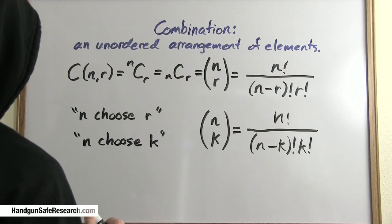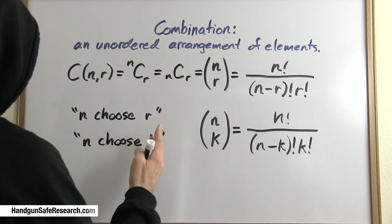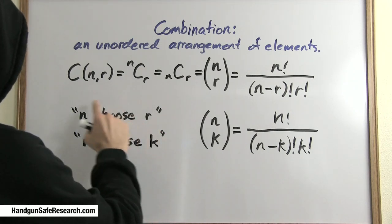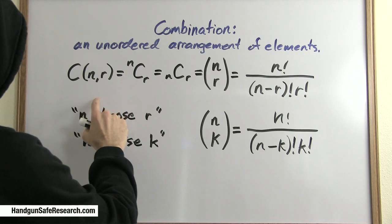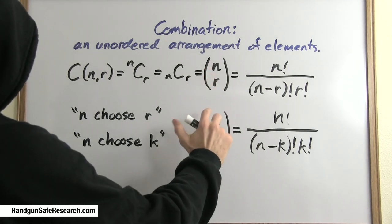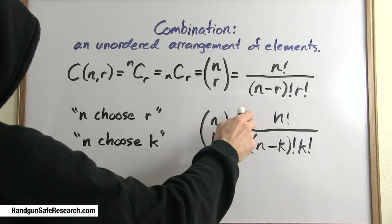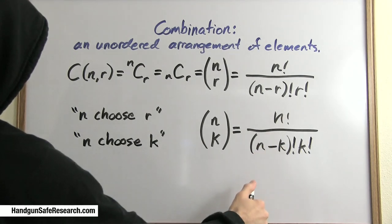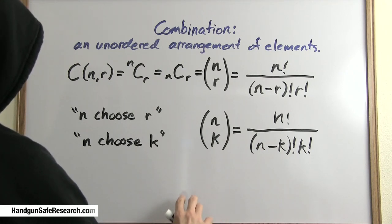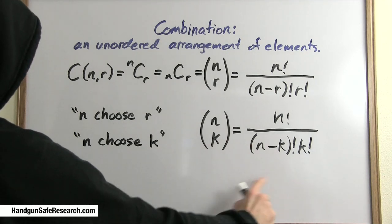Now we can start talking about combinations. A combination is an unordered arrangement of elements. The notation for combinations is a little bit more diverse than that of permutations. You may see capital C, and in parentheses, n comma r, or this, or this. Most commonly you will see this notation: n over r. This is not a fraction. This is read as n choose r. The formula is n factorial over (n minus r) factorial times r factorial. You may also see it with a k. r and k, as I mentioned, are used interchangeably. This is also read as n choose k. In combinatorics, you're more likely to see this notation.